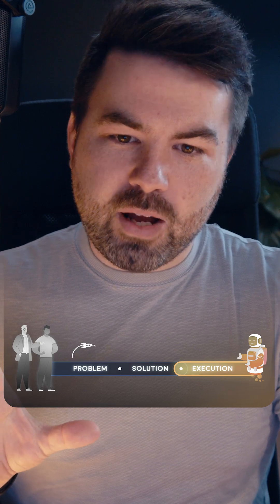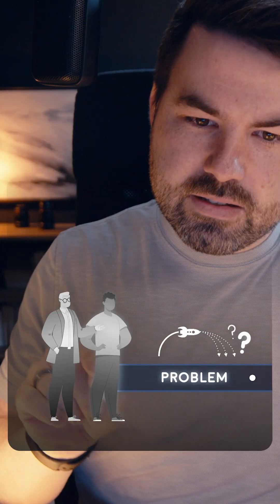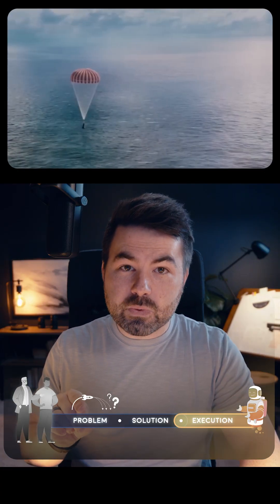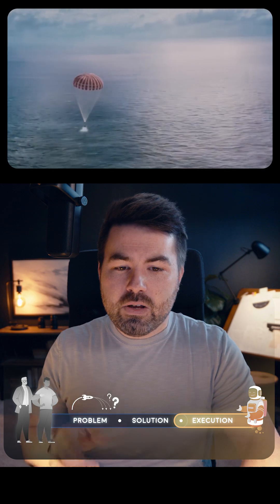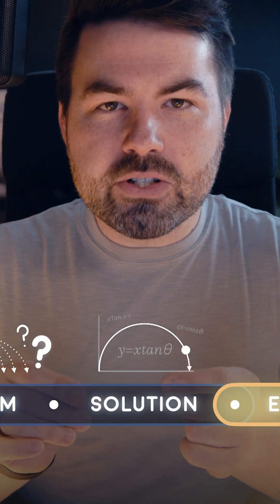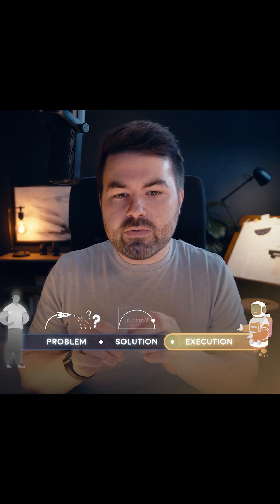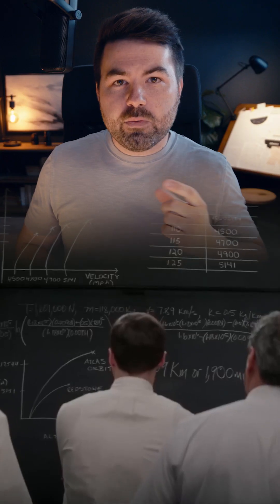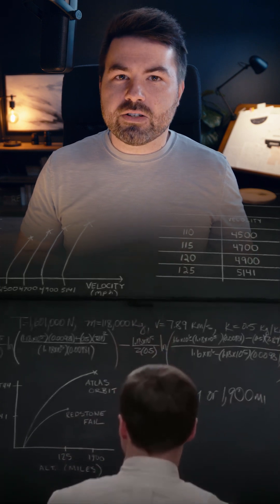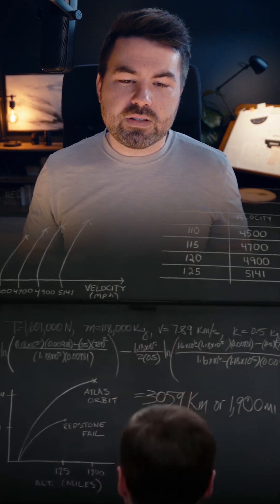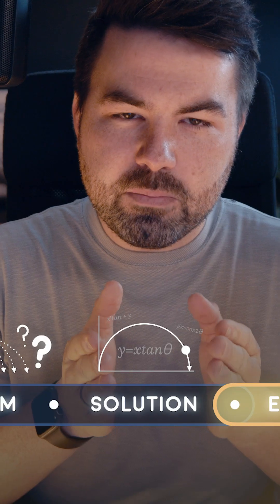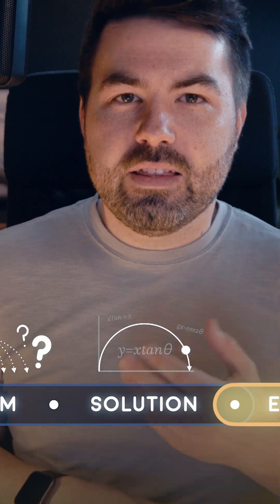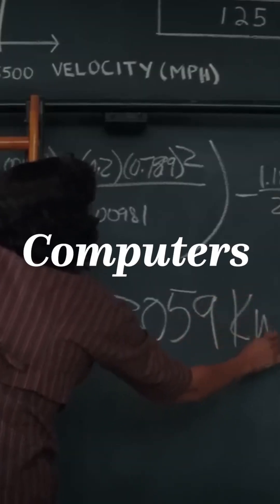It began when NASA had a problem. They needed to know where one of their rockets would land. They had some mathematical equations that could provide the solution. There were mathematicians working for NASA whose job was literally to compute these equations. They were called computers.